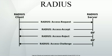RADIUS servers use the AAA concept to manage network access in the following two-step process, also known as an AAA transaction. AAA stands for authentication, authorization, and accounting. Authentication and authorization characteristics in RADIUS are described in RFC 2865, while accounting is described by RFC 2866.